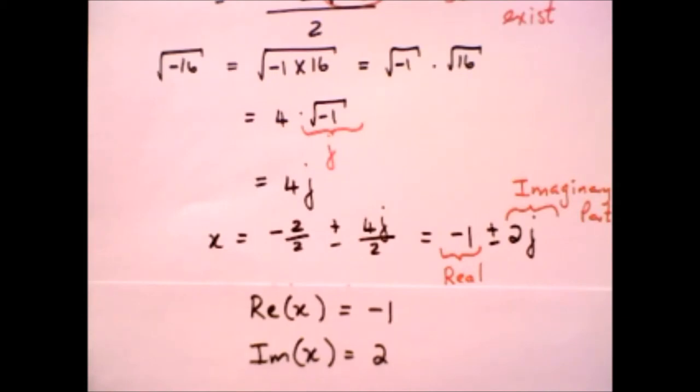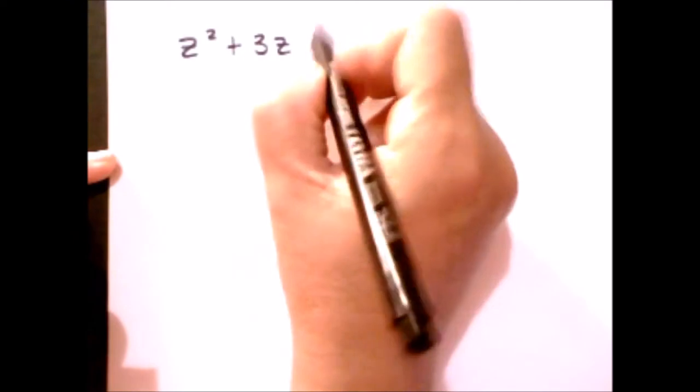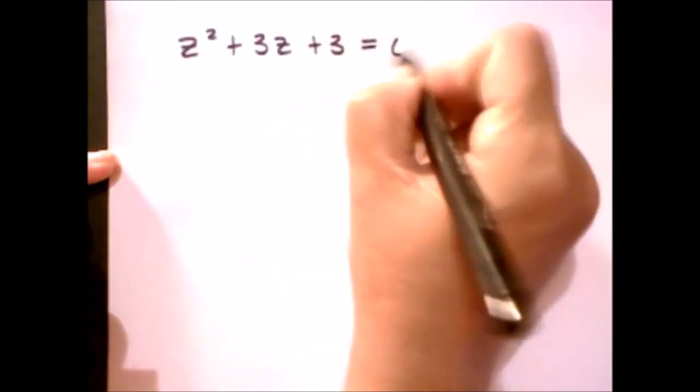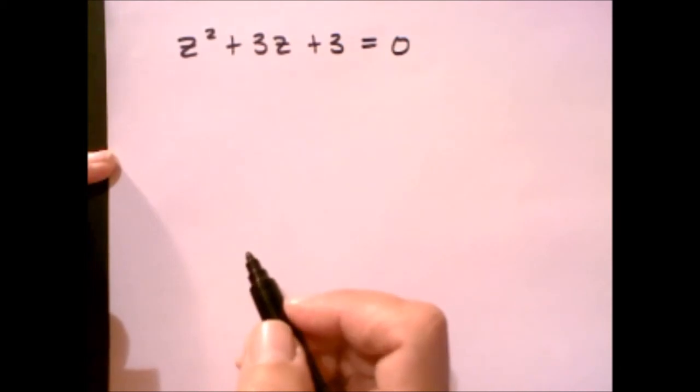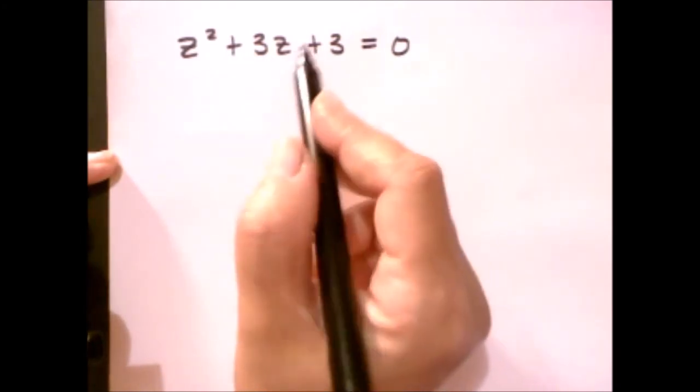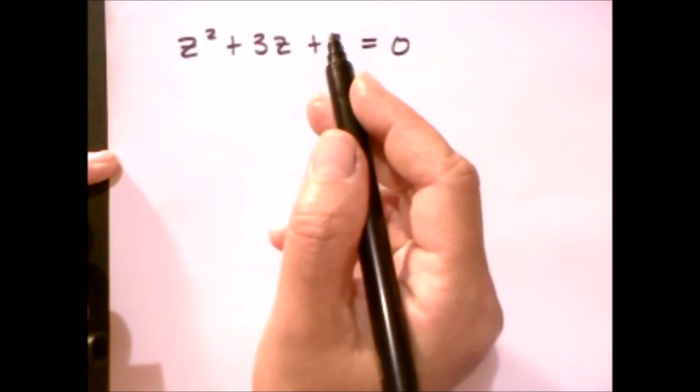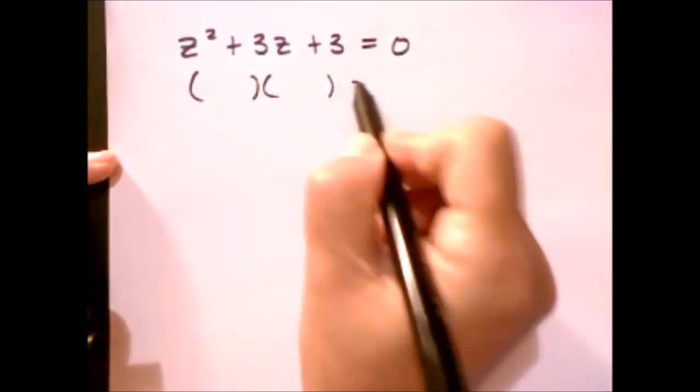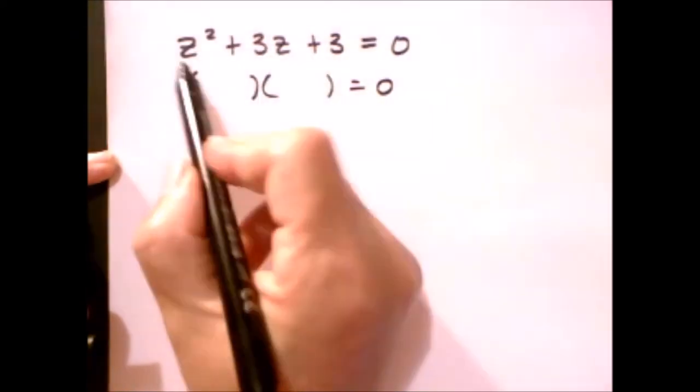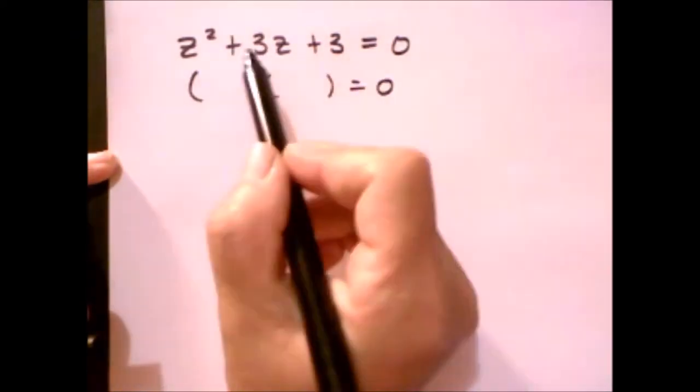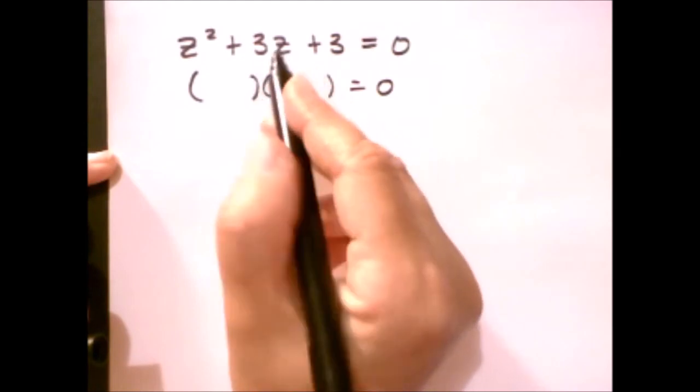Let's have a look at another example. In this example, we're going to look at a quadratic equation where your variable is z. We're going to look at z squared plus 3z plus 3 equals 0, and we want to find the roots of this equation. You can already tell that you cannot prime factorize, so you're going to have to use the quadratic formula again.